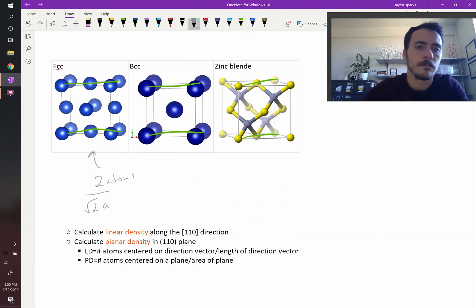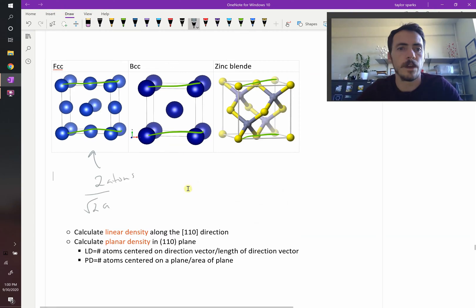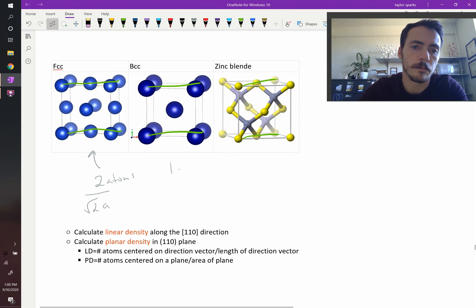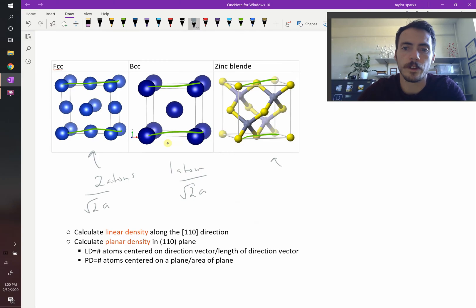This one would just be one atom per root two times a. Then this one over here would also be, if you're going right along the bottom, would be equal to two atoms per square root two of a. So that's the linear density calculation for these three.